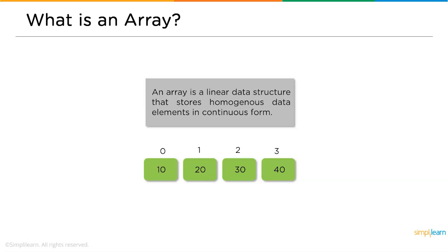For example, if you declare an array with an integer data type, you can only store integer elements in that array — you cannot store any other data type like float or character. The elements are stored in a continuous, adjacent format, as you can see in the example: 10, 20, 30, 40, located at index positions 0, 1, 2, and 3.